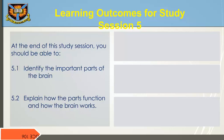Learning Outcomes. At the end of this study session, you should be able to: 1. Identify the important parts of the brain. 2. Explain how the parts function and how the brain works.